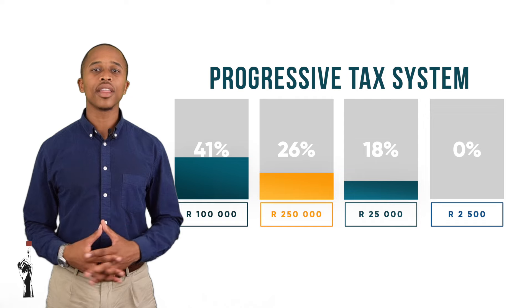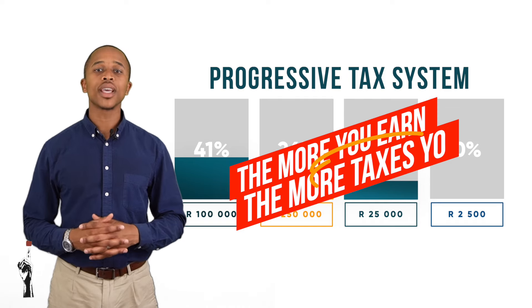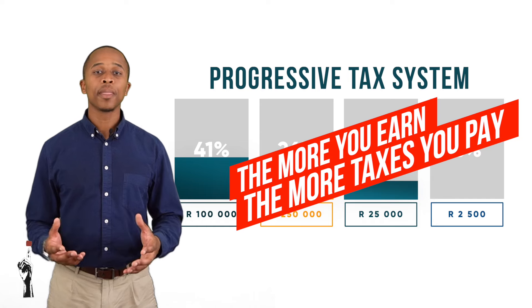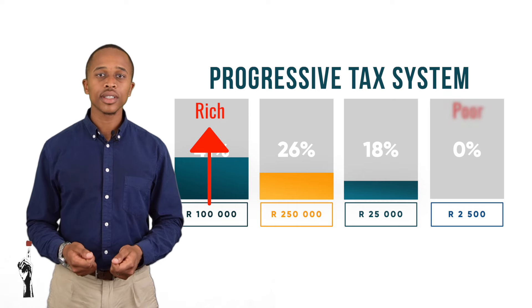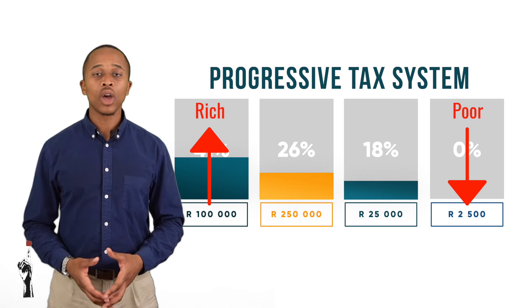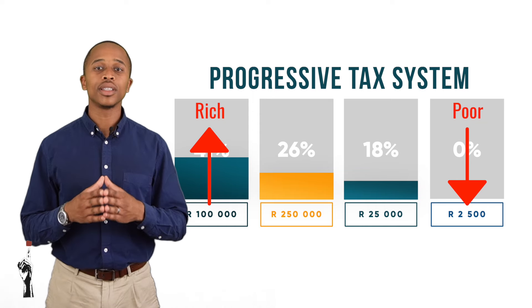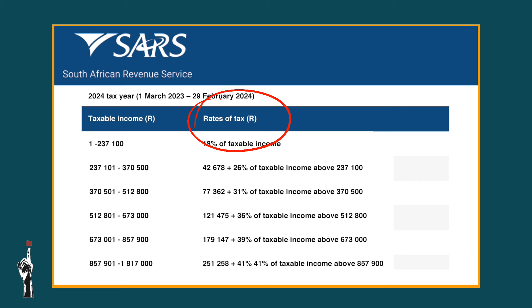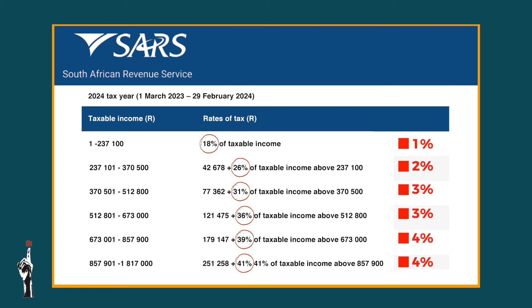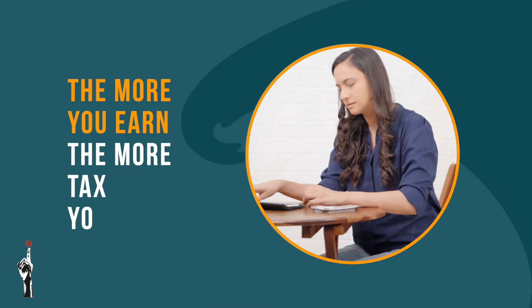In South Africa, we work with a progressive tax system. This simply means that the more you earn, the more taxes you pay. The richest people in South Africa pay the most taxes, and the poorest most likely pay no taxes. Let's have a look at an example of a tax bracket in South Africa. The left-hand column represents the income groups, and the right-hand column represents the percentage tax that people in a specific group have to pay. The scale moves up in percentages, which shows that the more you earn, the more tax you will pay.